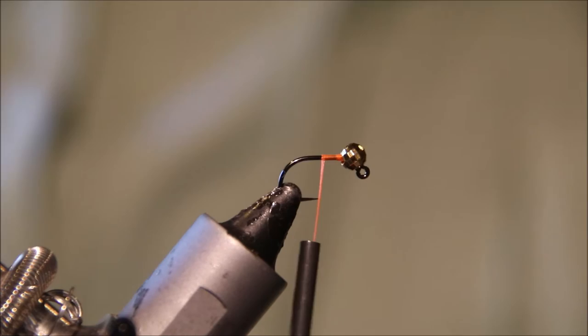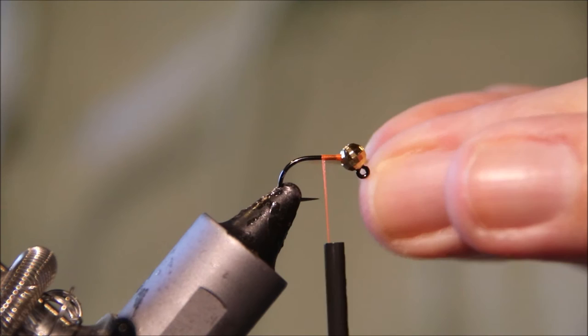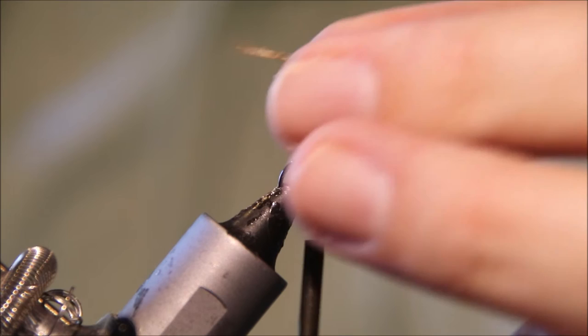It's actually quite a good way to approach your nymph boxes. You probably don't need a huge number of patterns, but tie them in 2 or 3 sizes and 2 or 3 weights. You could probably get away with 12 or 14 patterns and catch fish everywhere in the world.